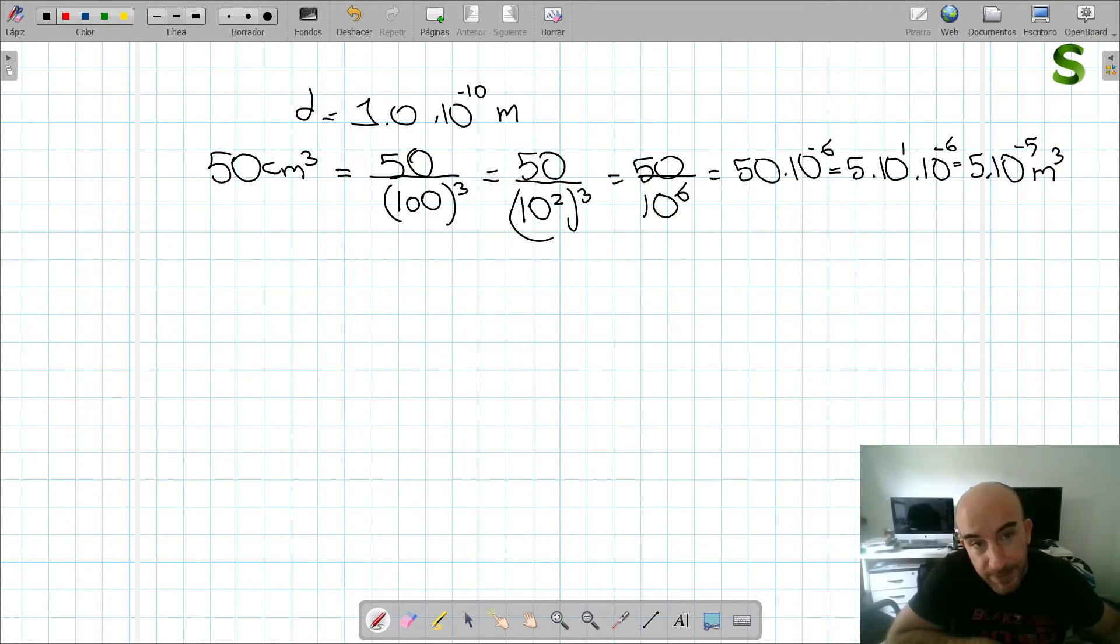If we know that the diameter is that, and we can suppose that in a metal we would have something like a cube as an approximation, we could approximate an atom as a cube, and we can consider that we could have that diameter in this direction, that same diameter in this direction, and the same diameter in that direction. So we would have, as an approximate of the volume of an atom, more or less 1 times 10 to the power of minus 10 cubed.